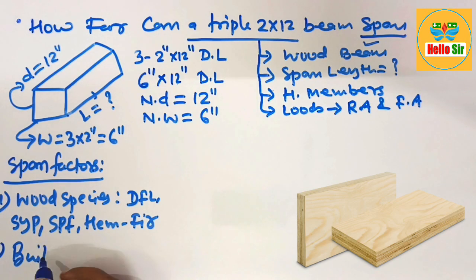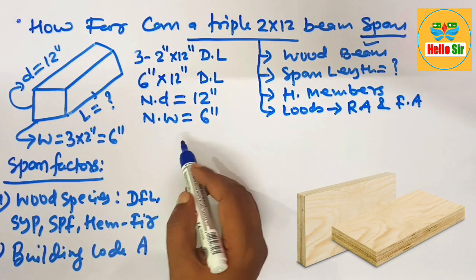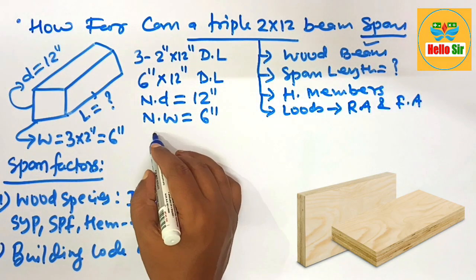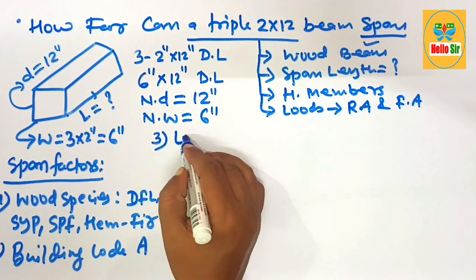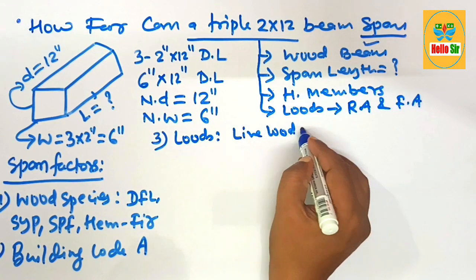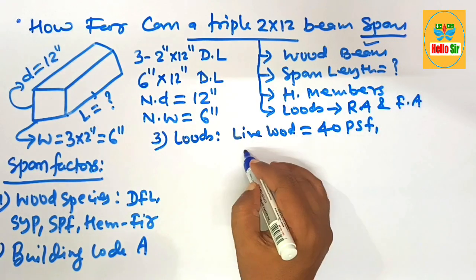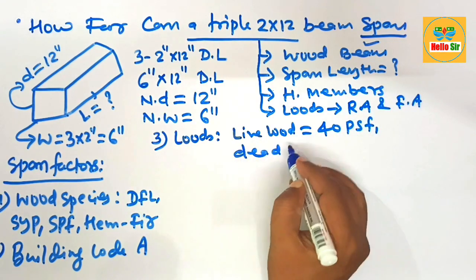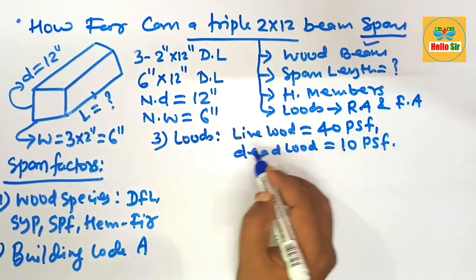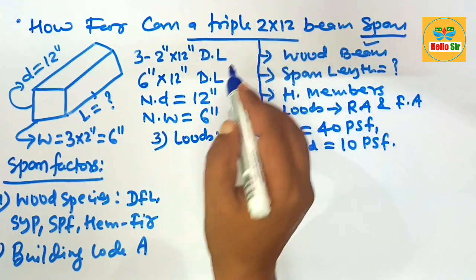The second major factor is the building code in your area, which specifies the span length for a triple 2 by 12 wood beam. The third major factor is the expected load condition — the live load may be 40 pounds per square foot and the dead load may be 10 pounds per square foot. These are the major factors that determine the span length of a triple 2 by 12 wood beam.